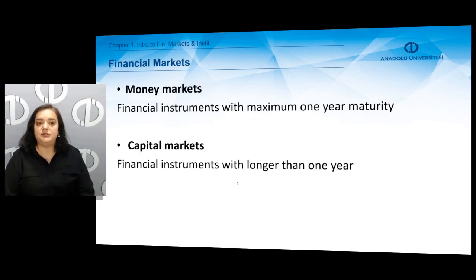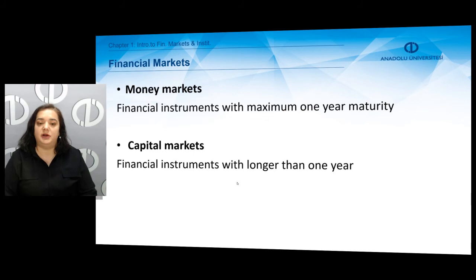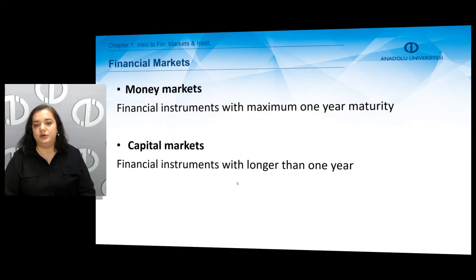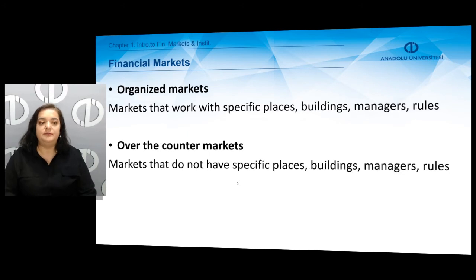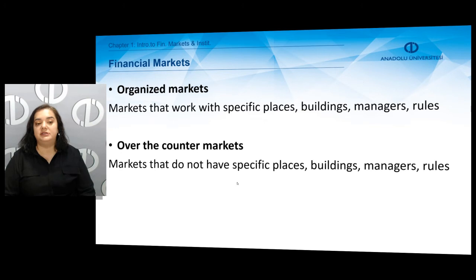There are two types of financial markets we can classify as money markets or capital markets, depending on the maturity of the financial instruments. In money markets, financial instruments with a maximum of one year maturity are traded, whereas in capital markets, financial instruments with a maturity of longer than one year are traded. We can also classify financial markets as organized or over-the-counter markets. Organized markets work with specific places, buildings, managers, and rules, whereas over-the-counter markets do not have specific places, buildings, managers, and rules.